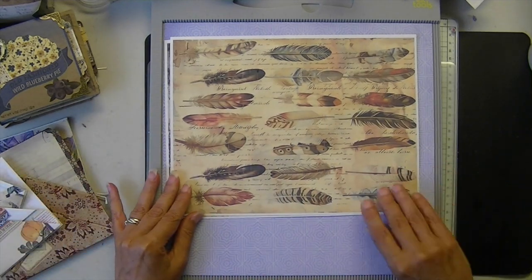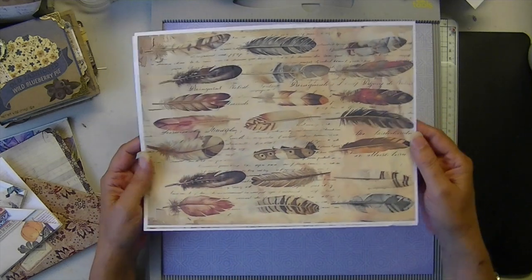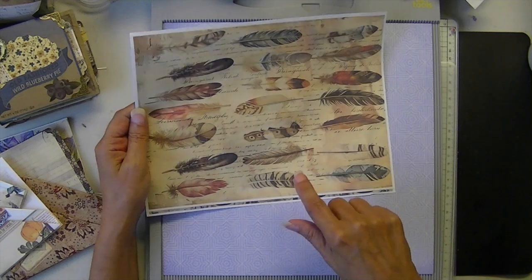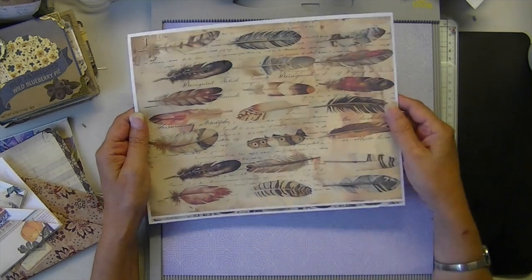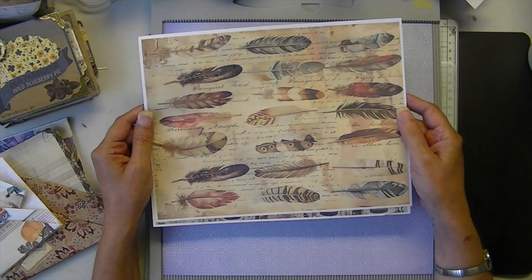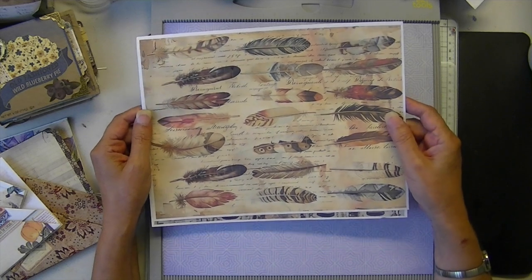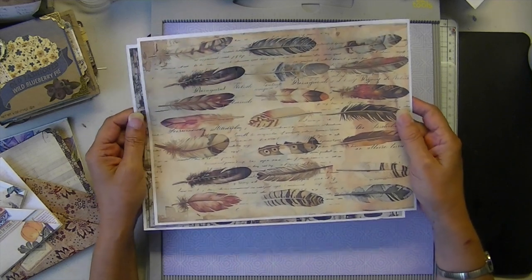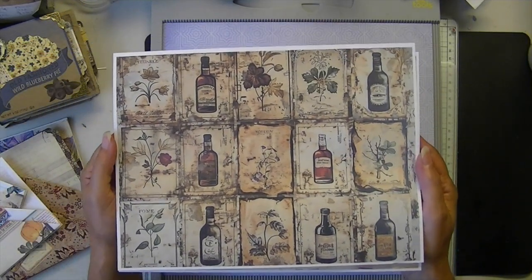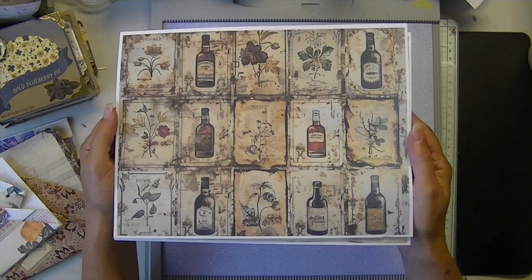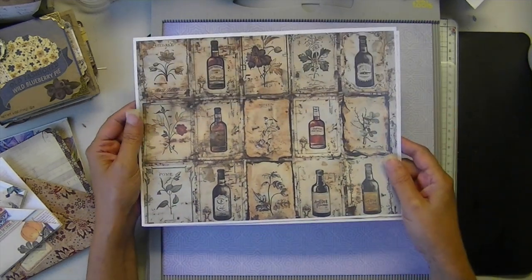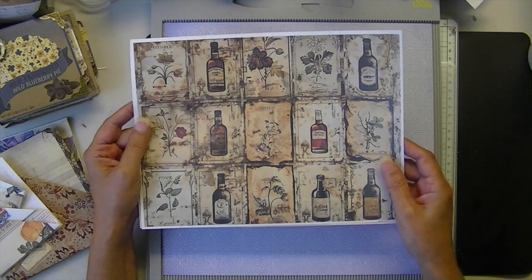So this week's papers are feathers, and these are on Etsy and Shopify. There's colorful feathers, there's muted feathers, there's text, and it's vintage. And then I have tinctures and extracts in the collage paper section on Etsy.